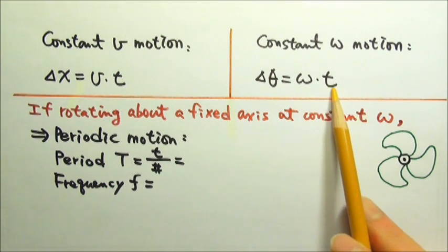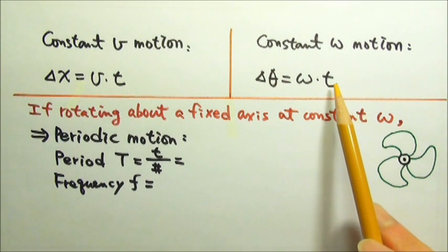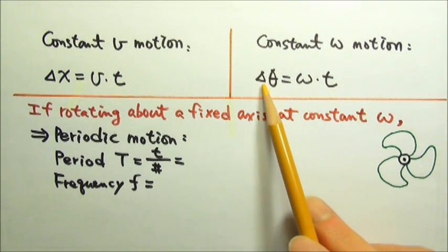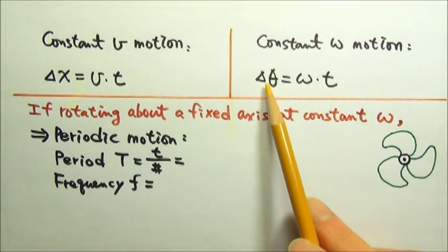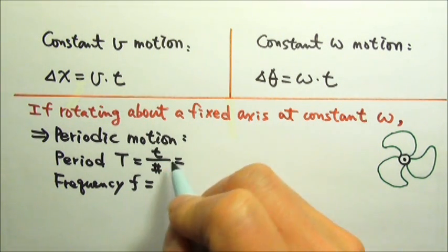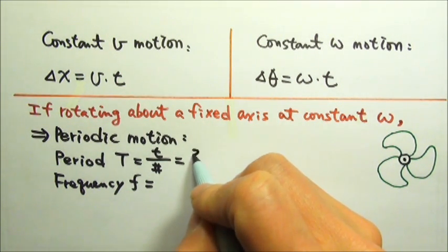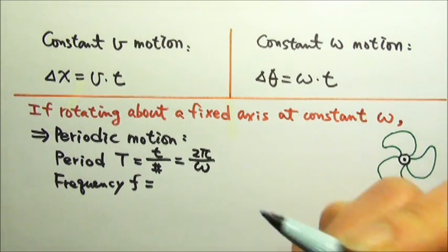If we want the time it takes for the blades to go around one circle, that means it's the time it takes for the angular displacement to be 2 pi radians. So to find the time, we just have to divide the 2 pi by omega. So the period is 2 pi divided by omega.